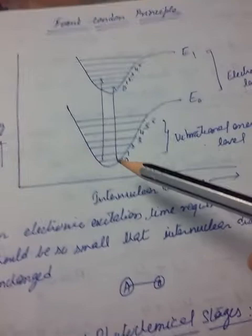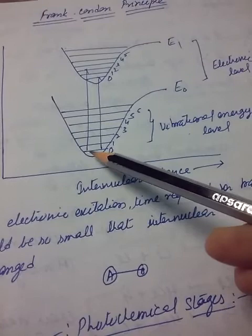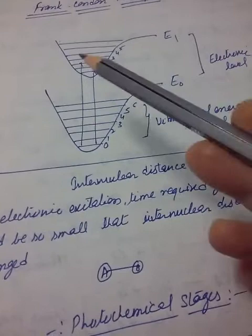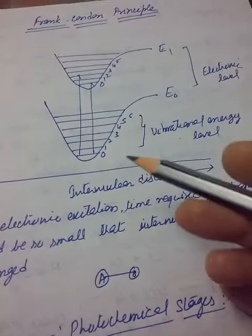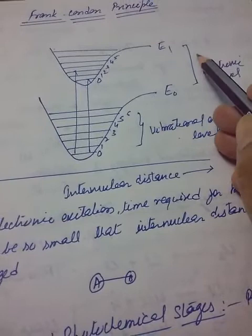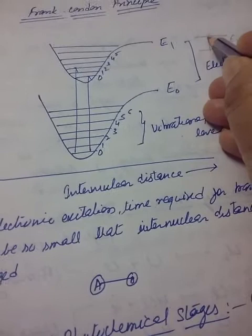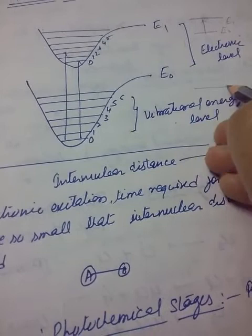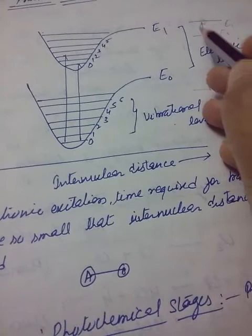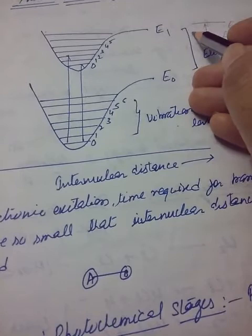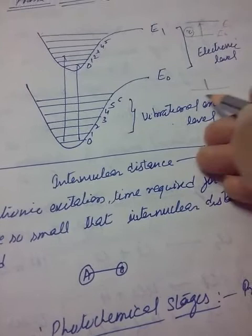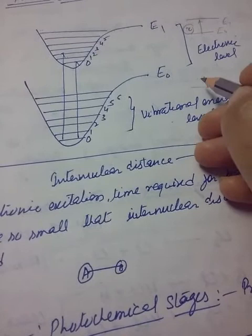Vibrational labels are further made up of rotational labels. When light falls on a molecule, the molecule goes from the ground state E0 to the excited state E1. If there were only one transition in the molecule, then only a single line spectrum would result. But the emission spectrum is not just a single line.